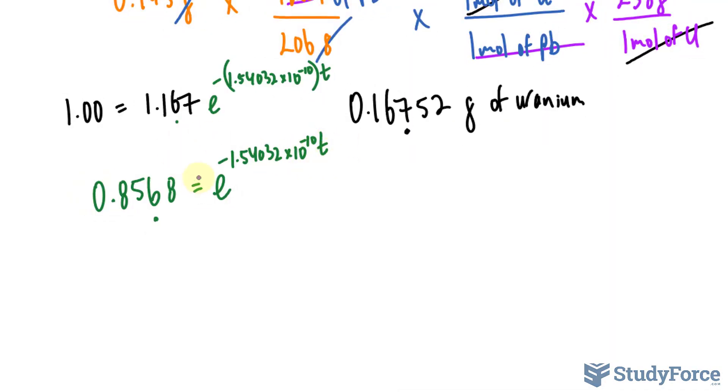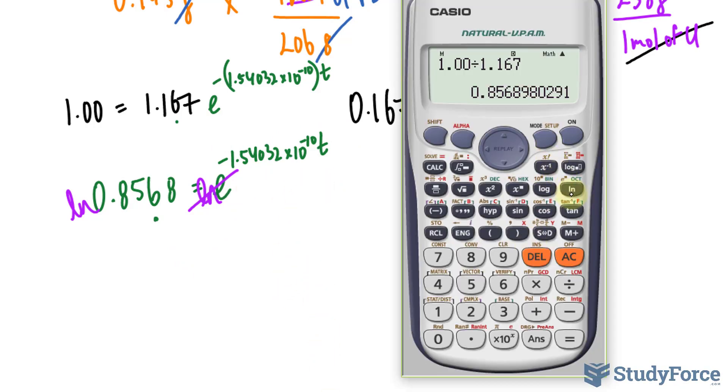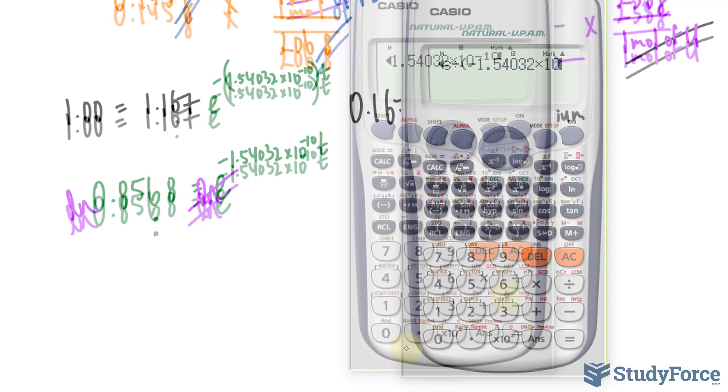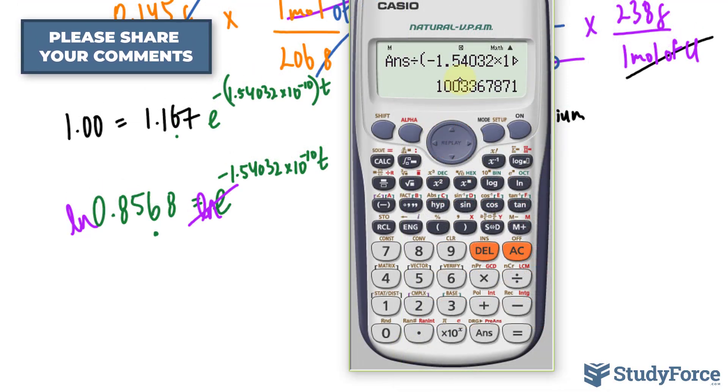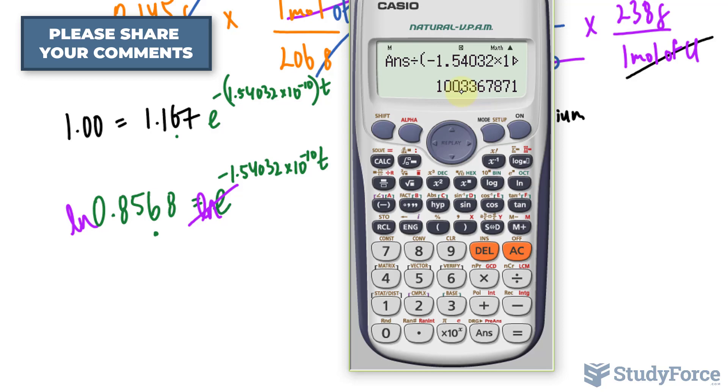Now to solve for t, we will ln both sides because ln-ing the right side will cancel out these two. And this number will be on the bottom here. So let's ln this number. And we get the following. It's a negative number. Divided by this number. And make sure that it's in parentheses. Otherwise, your calculator will not register the right number.